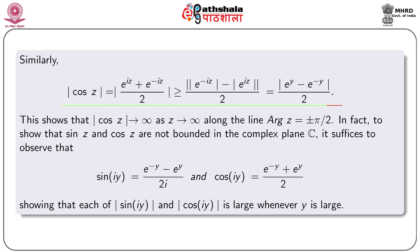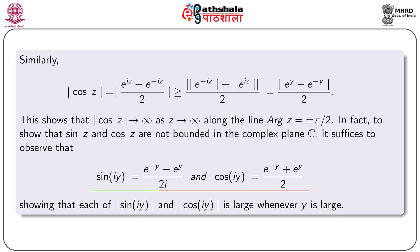Similarly, from the definition of cos z, |cos z| = |(e^(iz) + e^(-iz)) / 2| ≥ (|e^(-iz)| - |e^(iz)|) / 2 = (e^y - e^(-y)) / 2. This shows that |cos z| → ∞ as z → ∞ along the line for which arg z = ±π/2. In fact, to show that sin z and cos z are not bounded, it suffices to observe that sin(iy) = (e^(-y) - e^y) / 2, and each of |sin(iy)| and |cos(iy)| is large whenever y is large.